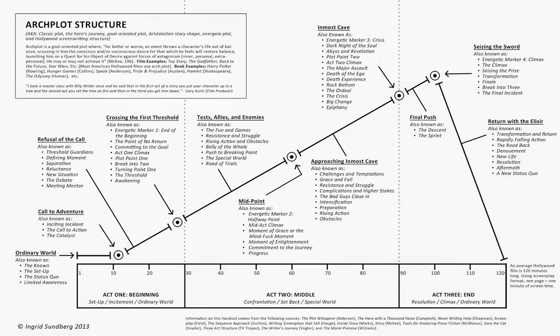You have a beginning, some stuff happens, and then these five points — call to adventure, crossing the threshold, the midpoint, inmost cave, and seizing the sword — those aren't really sections. Those are really just scenes. So great, that's five big important scenes you need to have in your novel, but what about all the other stuff?